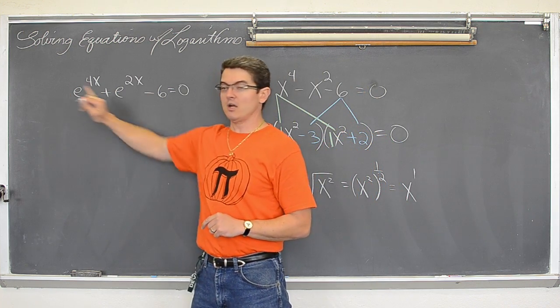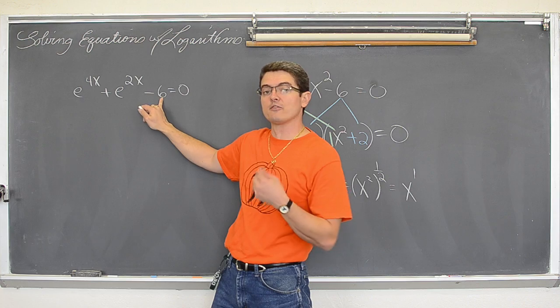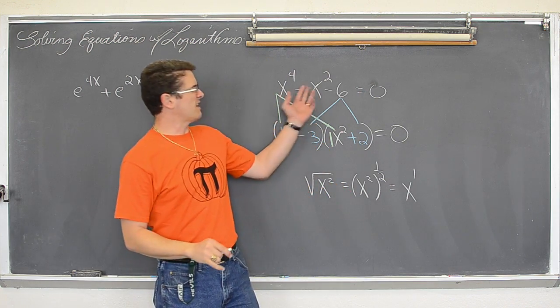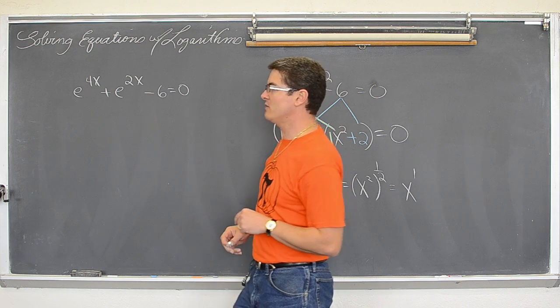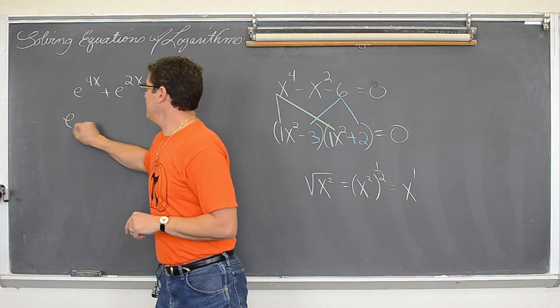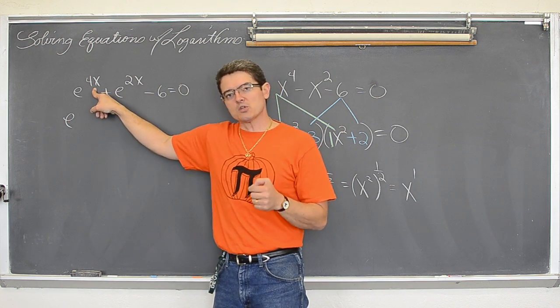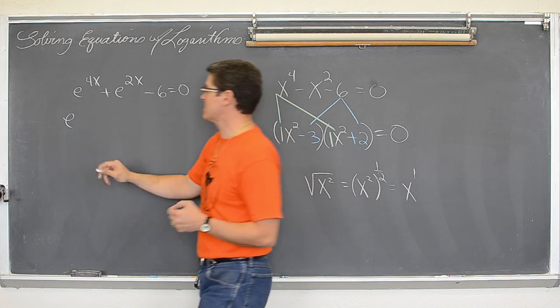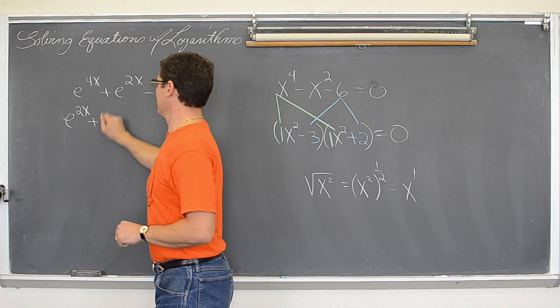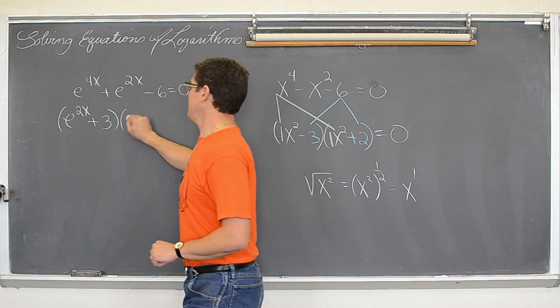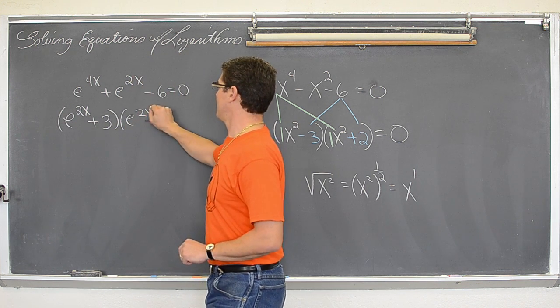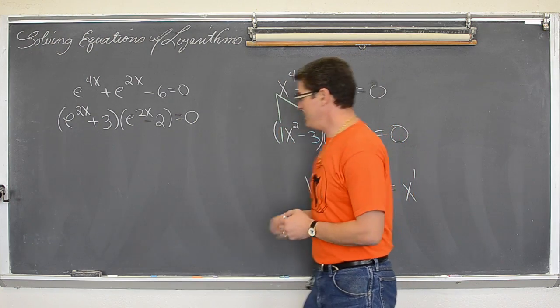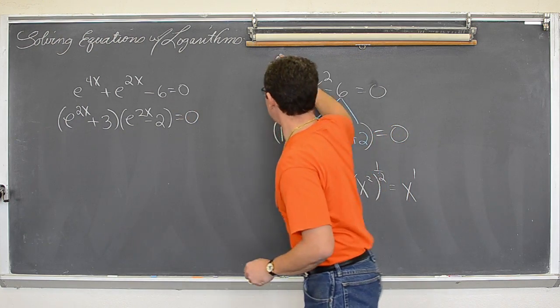It will be factorable as long as you can get your leading coefficient and your constant to come together to give you that middle term of positive one. I am not sure why I changed the sign on that one, but let's factor this over here. So we have a leading coefficient of one, we have a constant of six. So we are going to look for factors of six that subtract to be positive one. So we are going to be looking for e, now if you are going to square root e to the four x, that is four x divided by two, so it is going to be e to the two x plus three times e to the two x minus two. And then after you factor, you set each factor equal to zero to finish the problem up.